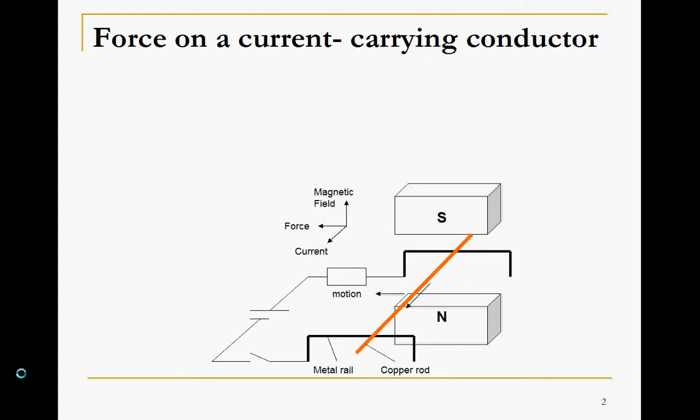We will start off this lecture by looking at the force acting on the current carrying conductor. Take a look at this diagram. You have a copper rod placed in a region of magnetic field. So when the circuit is switched on, there will be a current flowing through the copper rod.